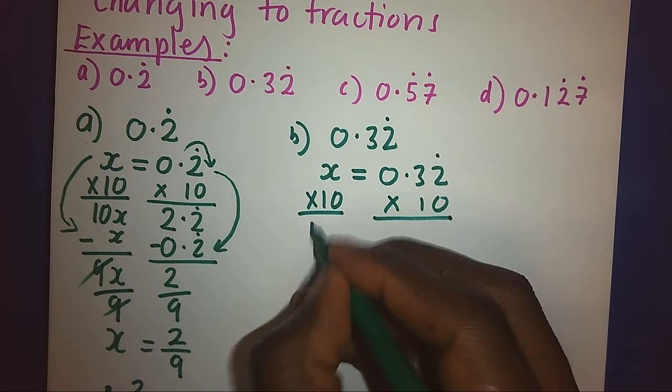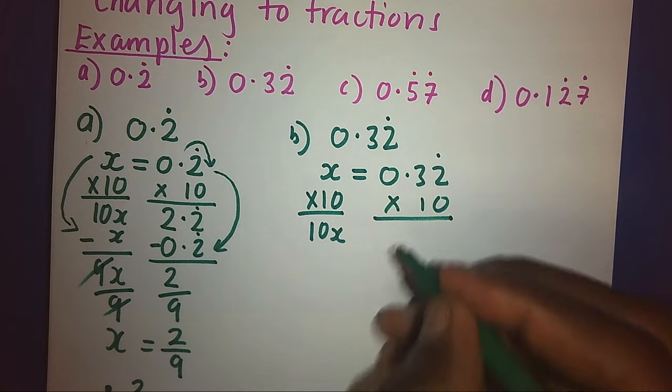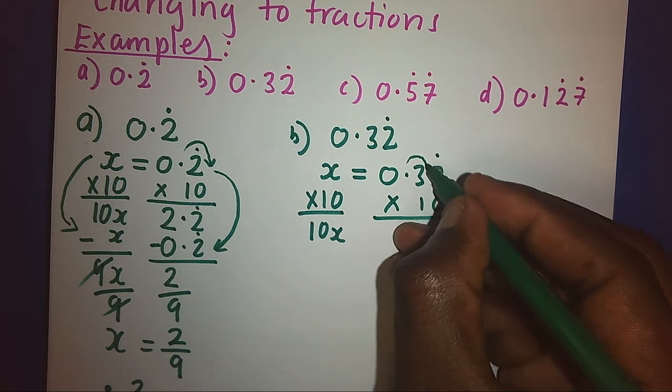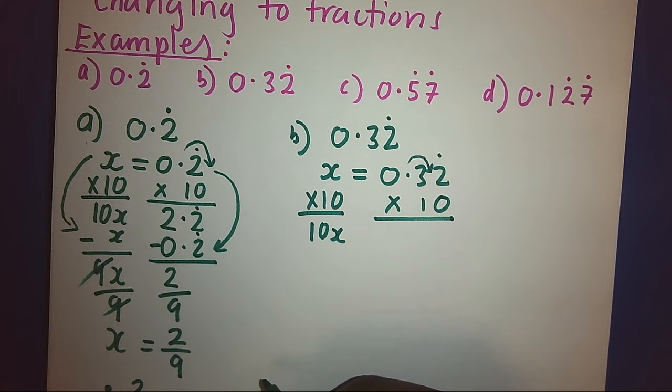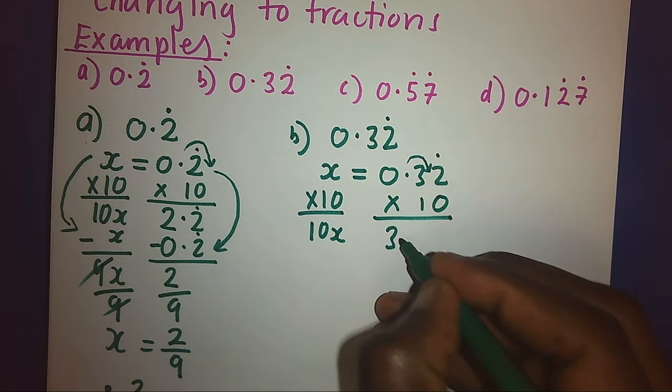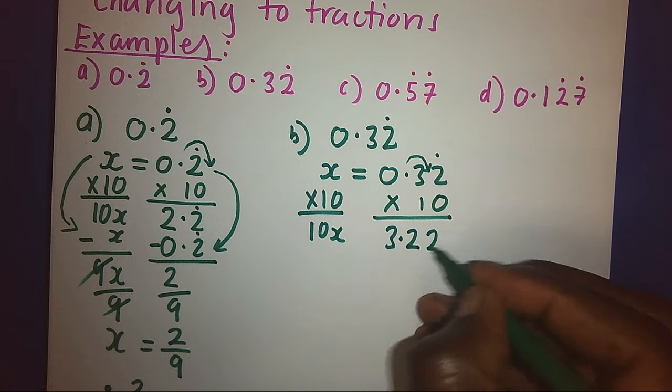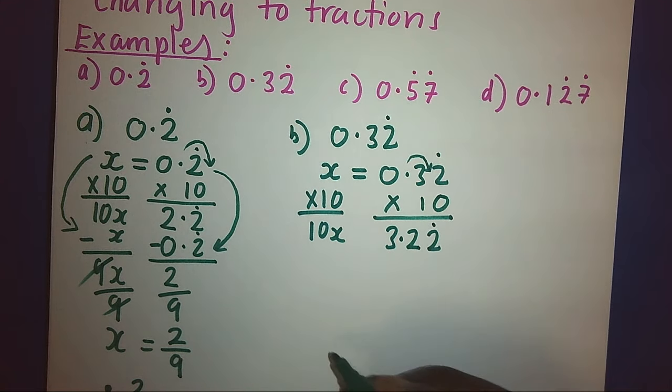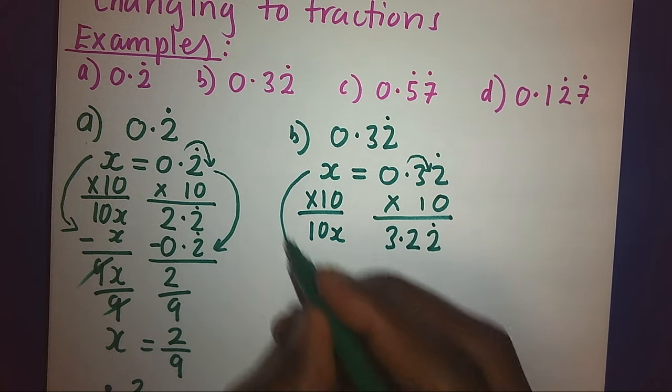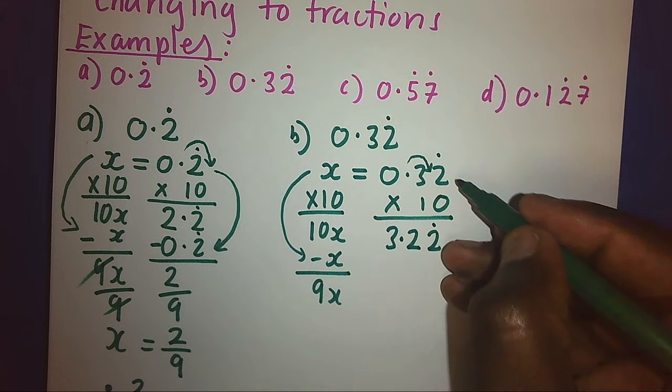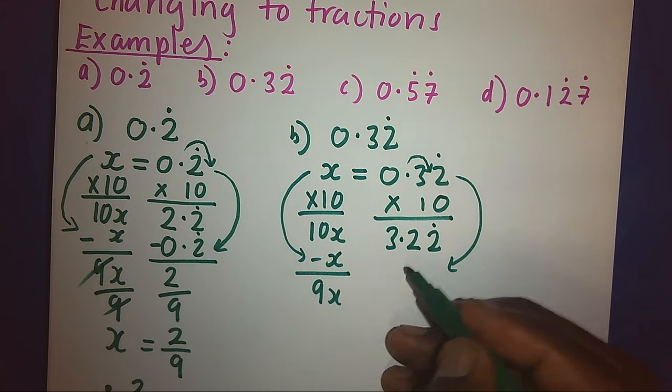We get 10x. Because I'm multiplying by 10, this point will shift. It will come there, and we shall get 3.2. Bring back the recurring number so that we have two decimal places. Hence, we shall subtract our starting statement. And we get 9x. Even this side, we shall subtract our starting statement.